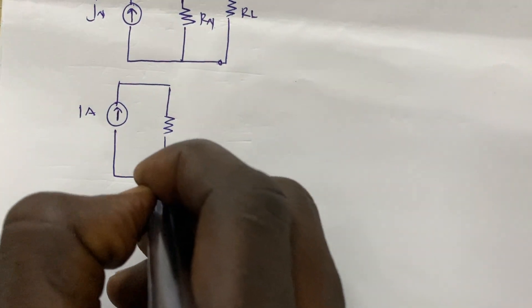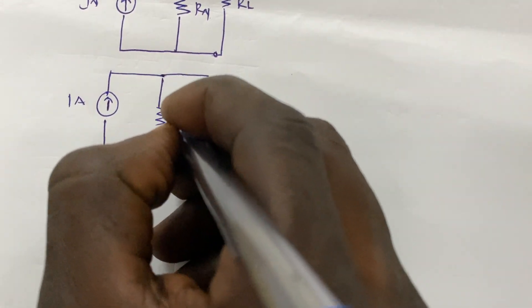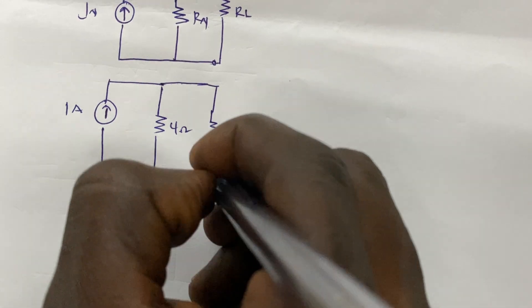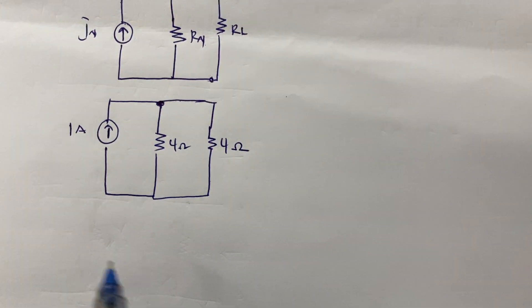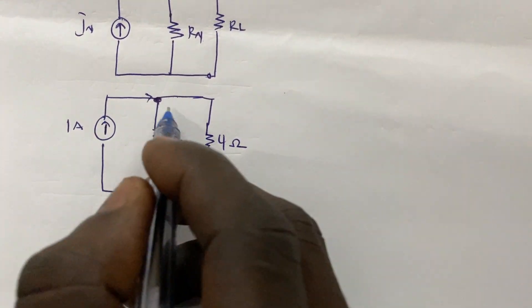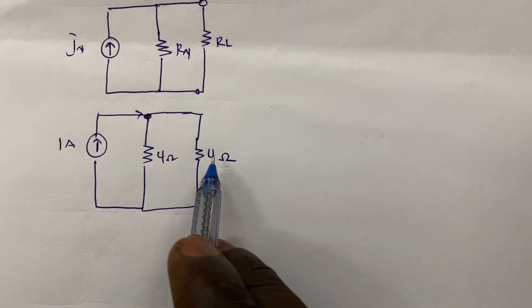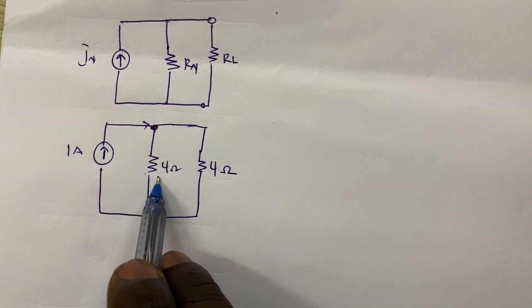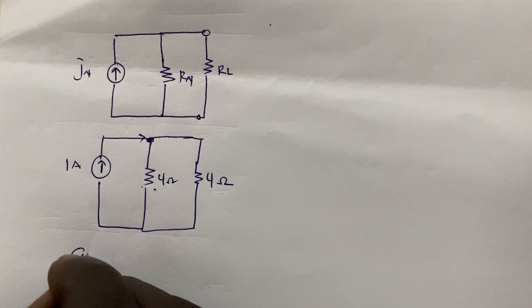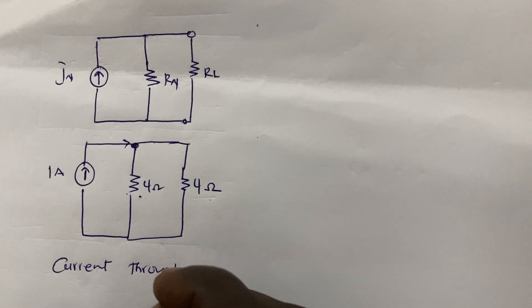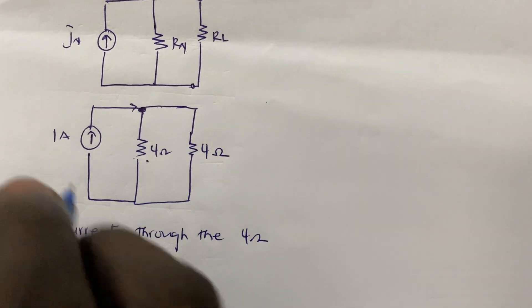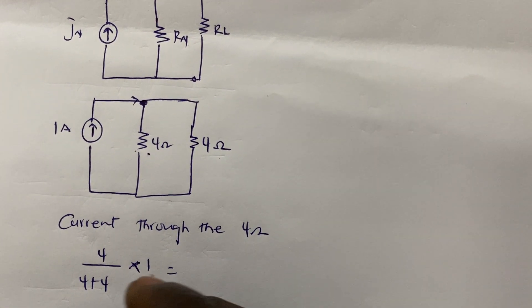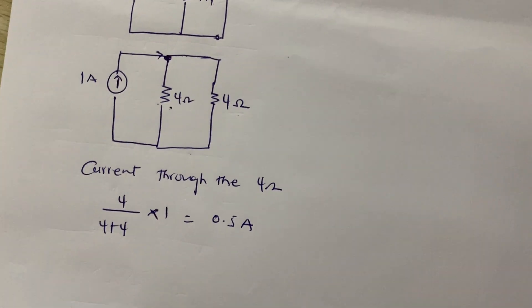With In = 1 amp, Rn = 4 ohms, and RL = 4 ohms, we use the current divider rule. The current through the 4-ohm load is: 4 over (4 + 4), times the total current of 1 amp, giving us 0.5 amps. Thank you for watching this video — please don't forget to share, comment, and subscribe.